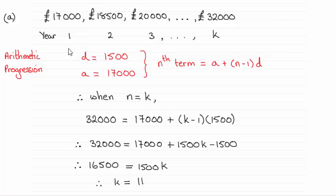So what we've got here is an arithmetic progression where the common difference D is £1,500 and the first term A is £17,000.